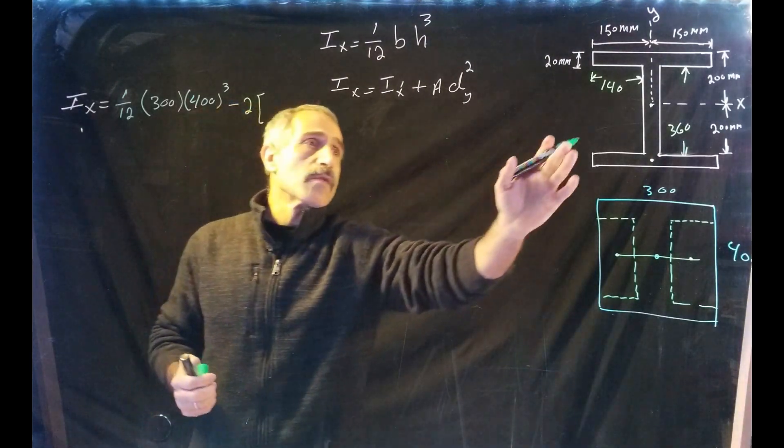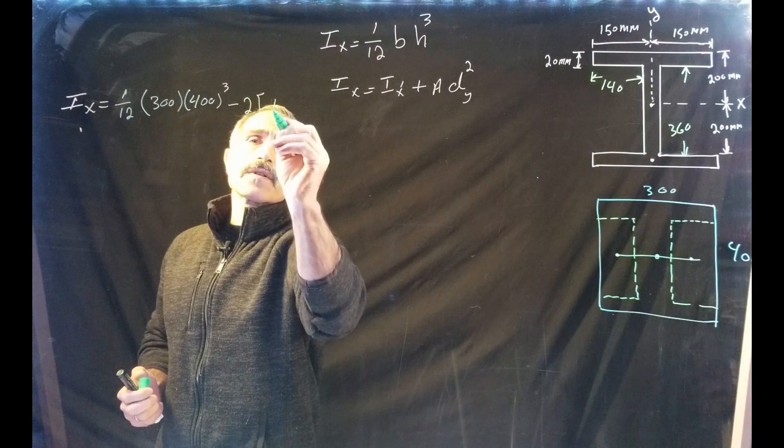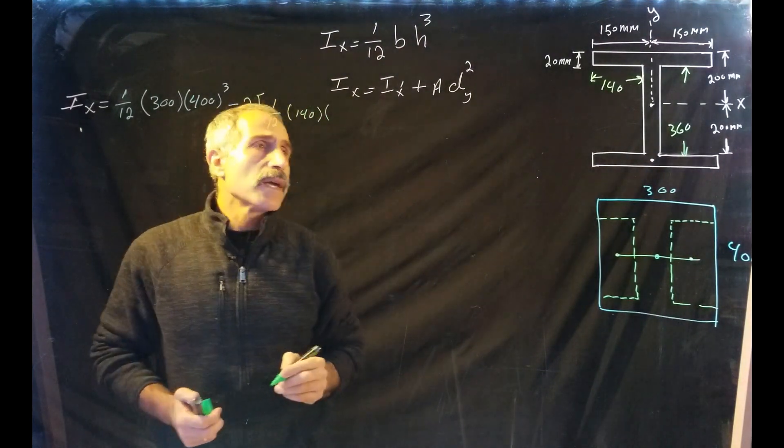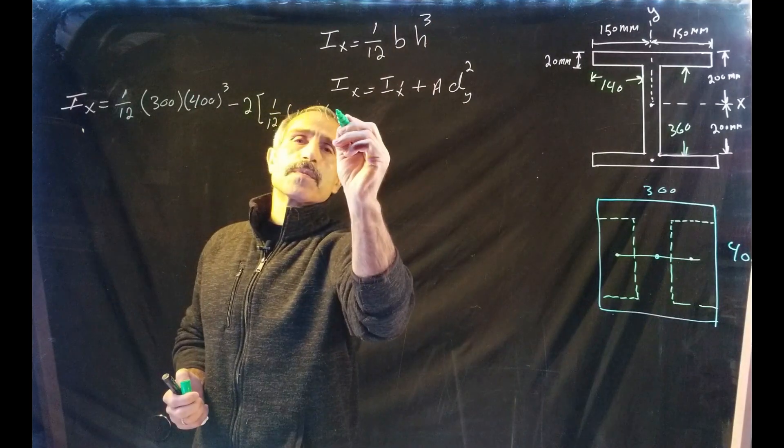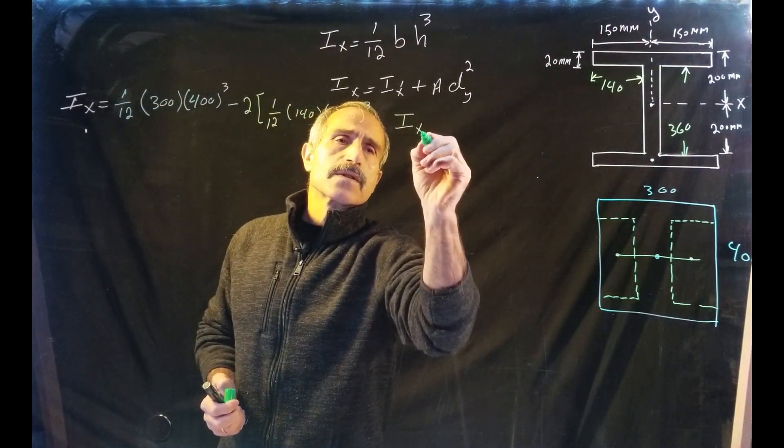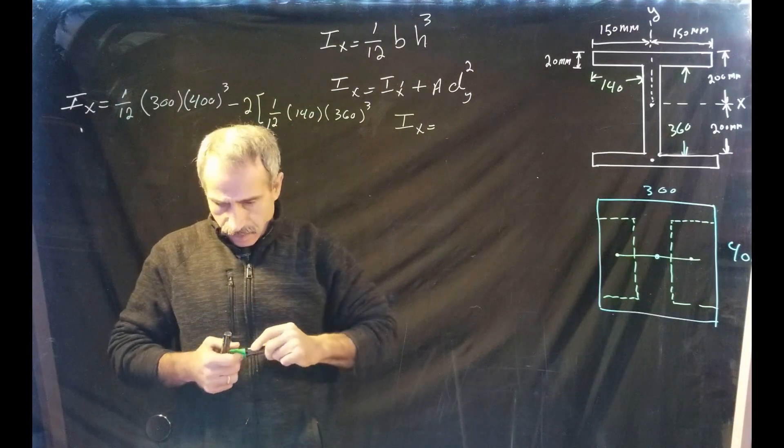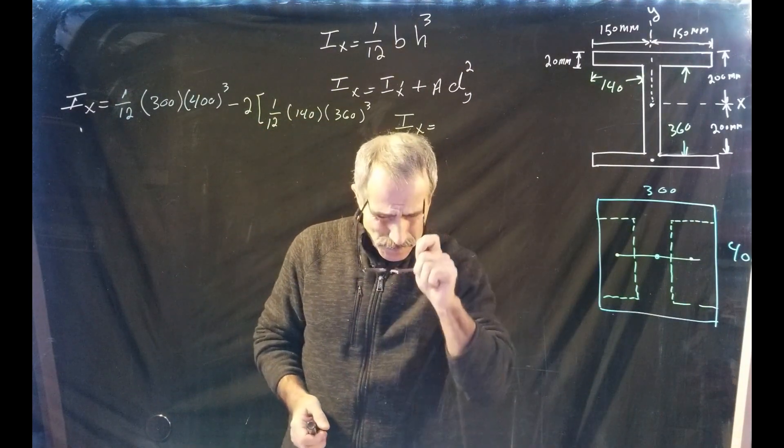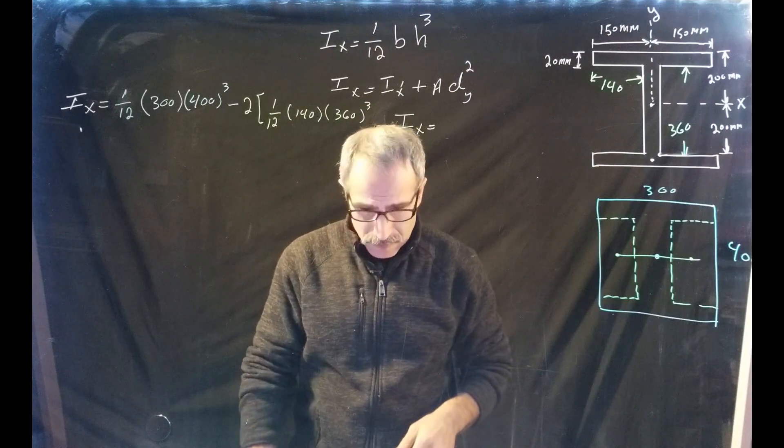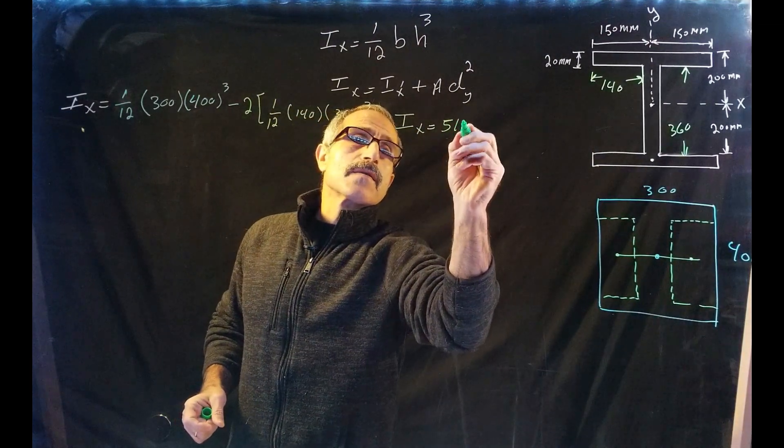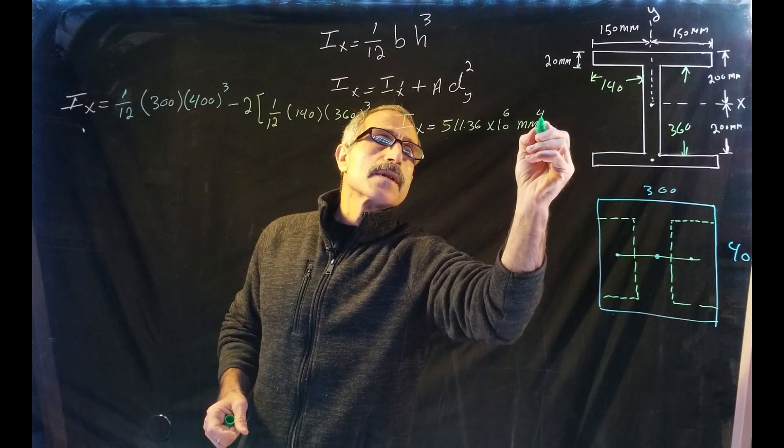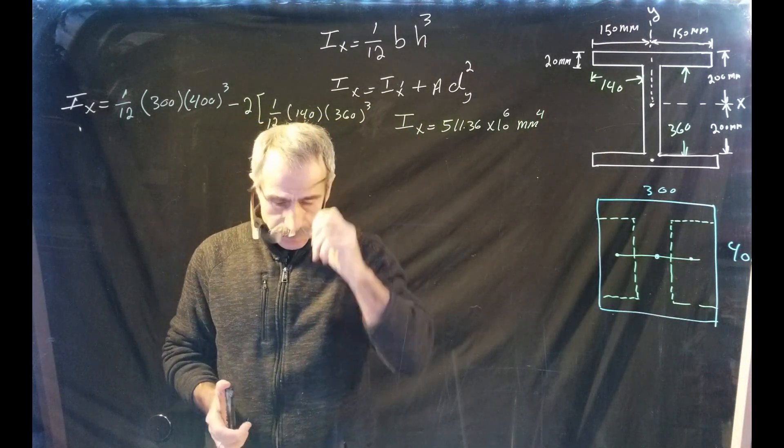Okay, so there's two of them - this one and that one. So two times 1/12. All right, my b is going to be 140, and my h is going to be 360 cubed. Therefore, Ix is equal - I think I calculated that already - so it's going to be 511.36 times 10 to the power 6 millimeters to the fourth. So there's my Ix.